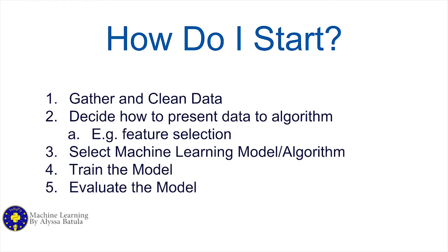So how do you actually go about developing machine learning? The first two steps are very data-oriented. You have to get your data and clean it to make sure there's no weird missing information or corruption. On top of that, you have to decide how to present the data to your algorithm — this is sometimes called feature selection, which is about what information out of your data set you think is relevant. Then you select your machine learning algorithm, train your model, and evaluate how well it's working.